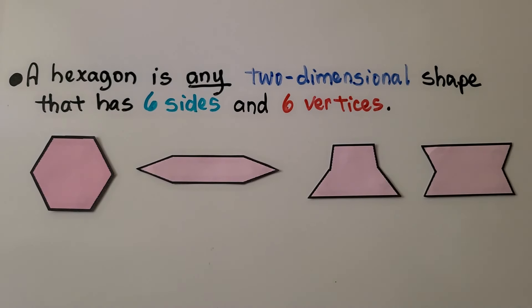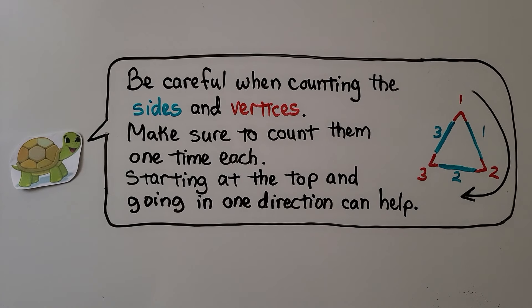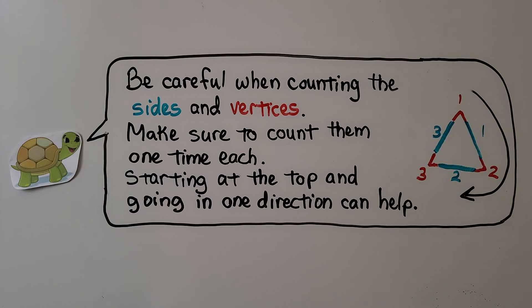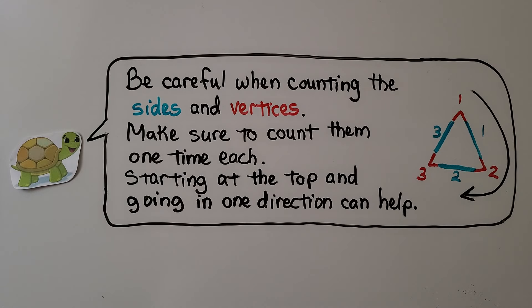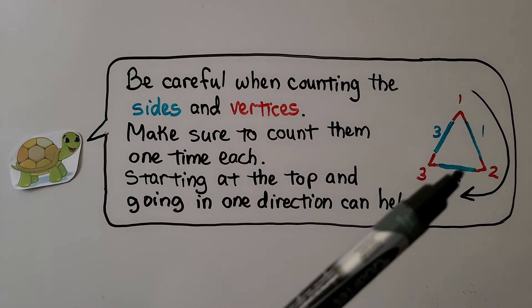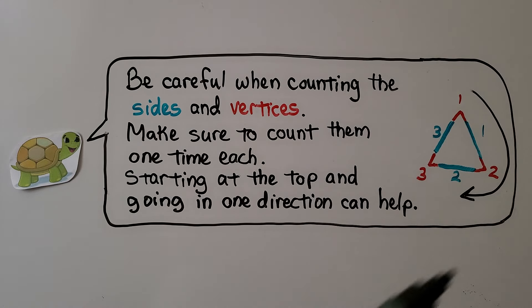They can be any two-dimensional shape as long as it has the right number of sides and the right number of vertices. Be careful when counting sides and vertices — make sure to count each one only once. Starting at the top and going in one direction can help. For counting the red vertices, we start here and go one, two, three. For counting the blue sides, we go one, two, three.